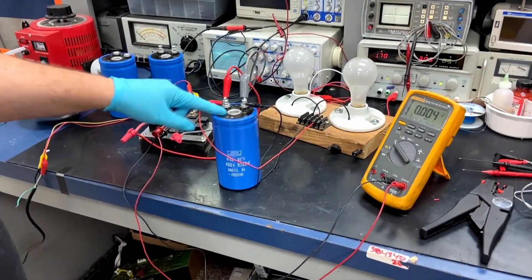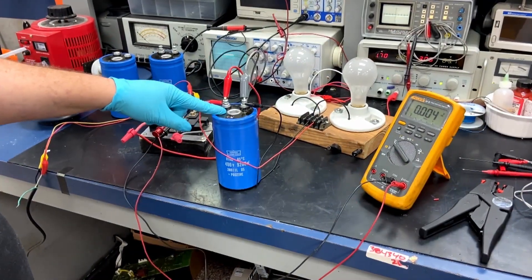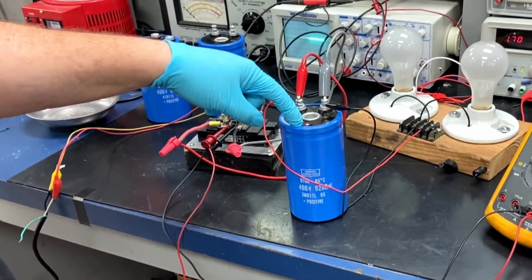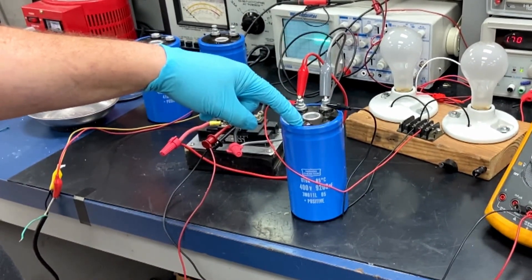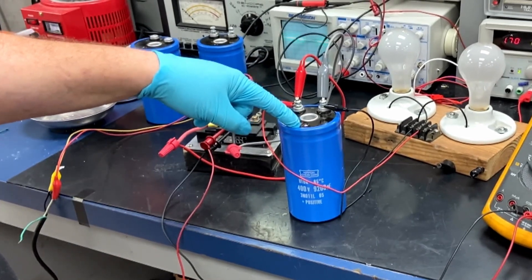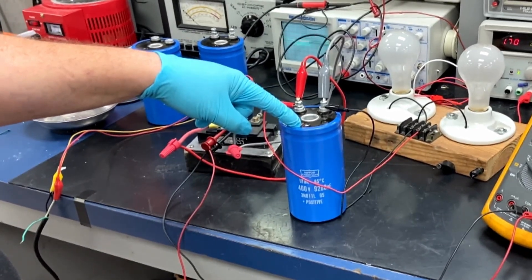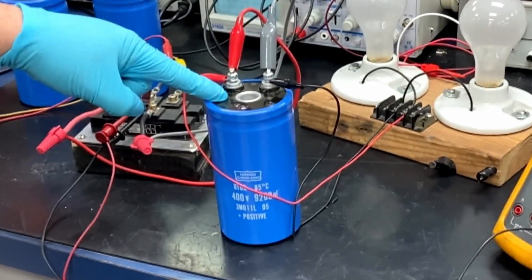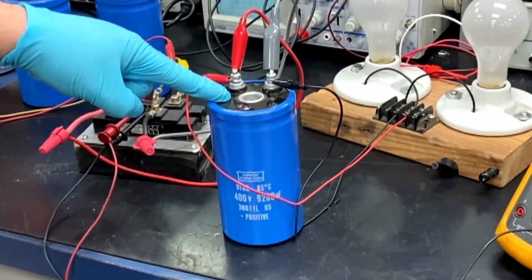When an electrolytic capacitor has been in storage for a long time, the metal oxide layer that separates the dielectric inside can break down. When this happens, the capacitor could fail in a spectacular way up to and including explosion. So this layer inside the capacitor must be formed before you can use it.